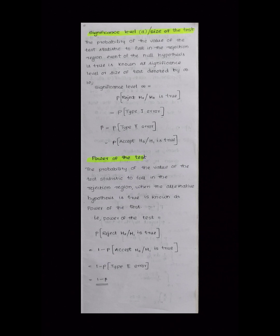The size of the test is the significance level. The probability of the test statistic falling in the rejection region when the null hypothesis is true is known as the significance level or size of the test, denoted by alpha. This is also related to the power of the test.